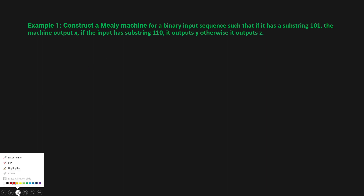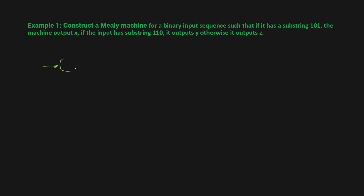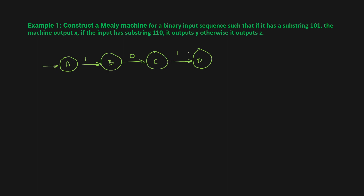Let's construct the basic Mealy machine. Starting in state a, if you get input 1 you go to state b. Then you get input 0, you go to state c. You get input 1, you go to state d. Now if the sequence has 101, then the machine output is x.